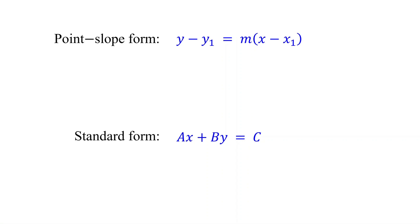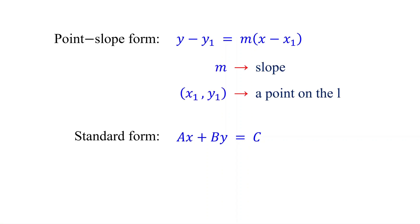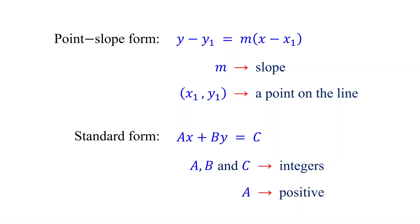In point-slope form, M represents the slope, and X1, Y1 represents a point on the line. In standard form, A, B, and C are integers, and A should be positive.